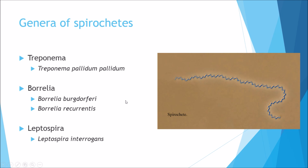The three general spirochetes we will be looking at are: Treponema pallidum pallidum; Borrelia, specifically Borrelia burgdorferi and Borrelia recurrentis; and finally Leptospira, specifically Leptospira interrogans.